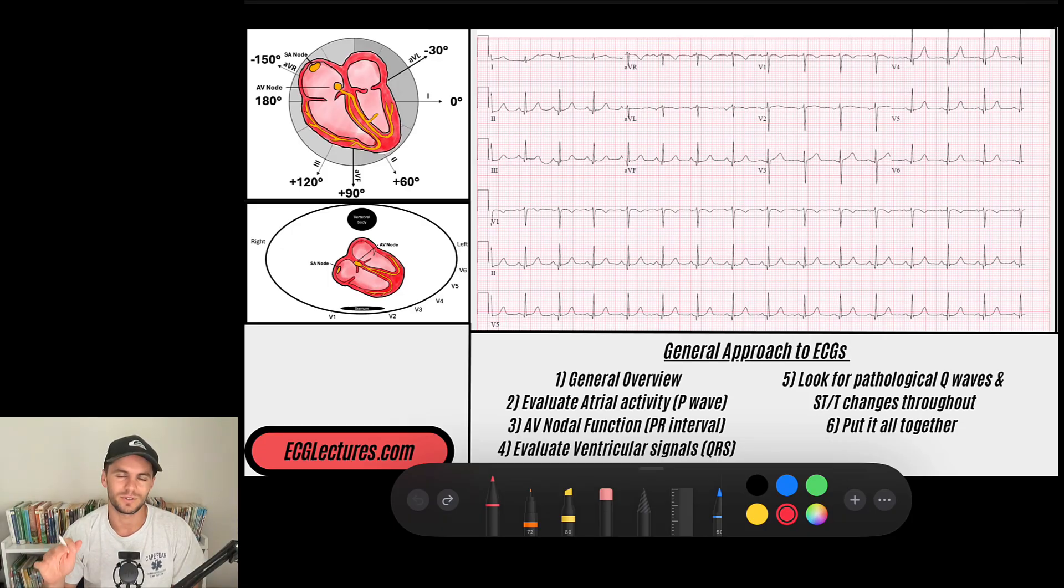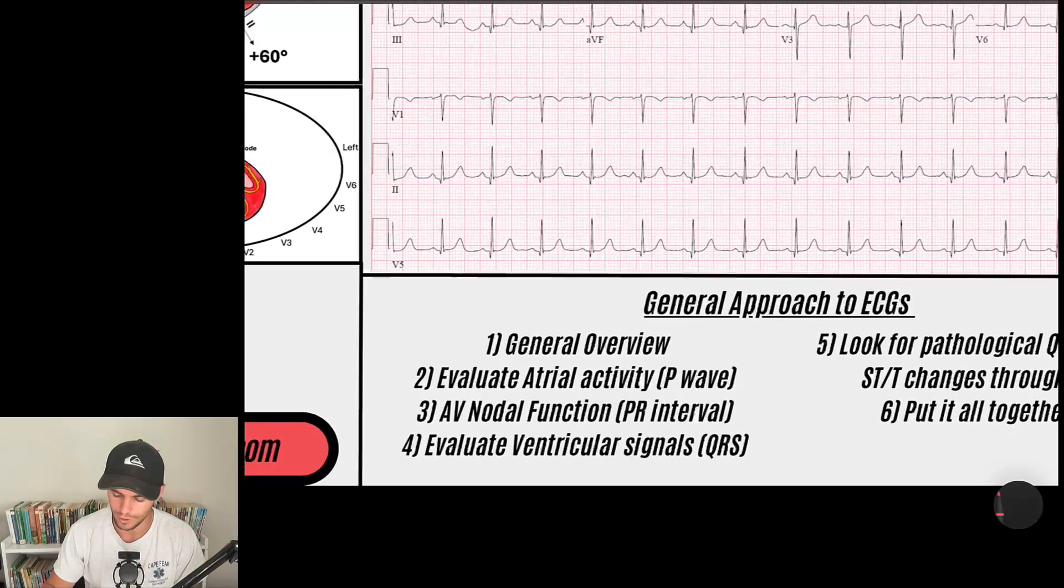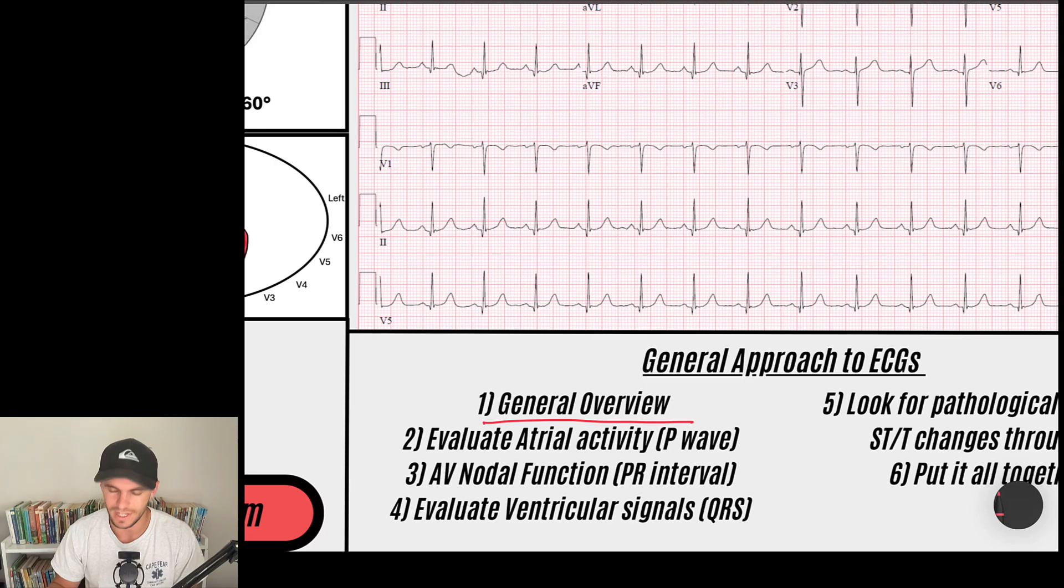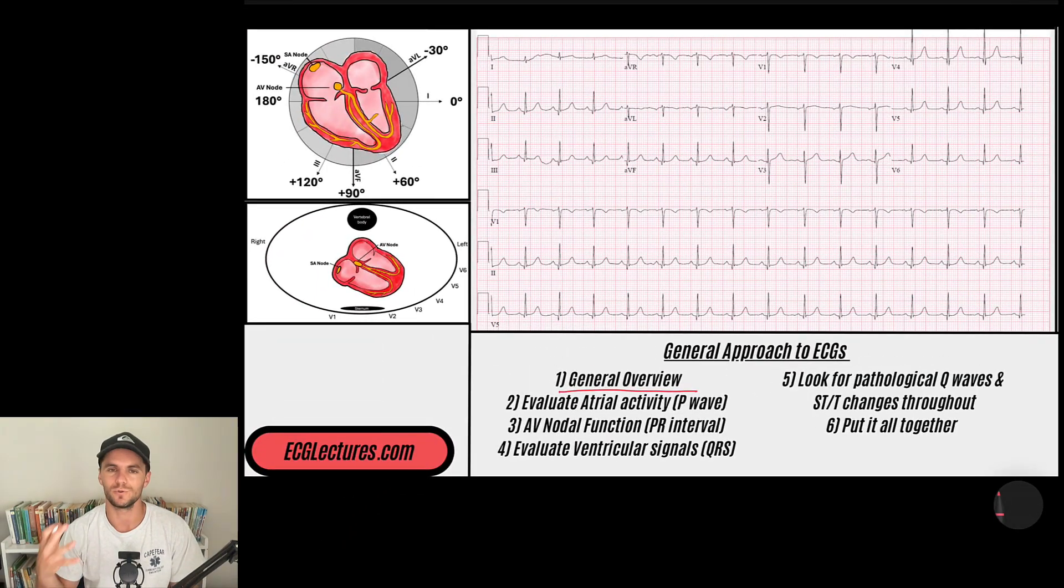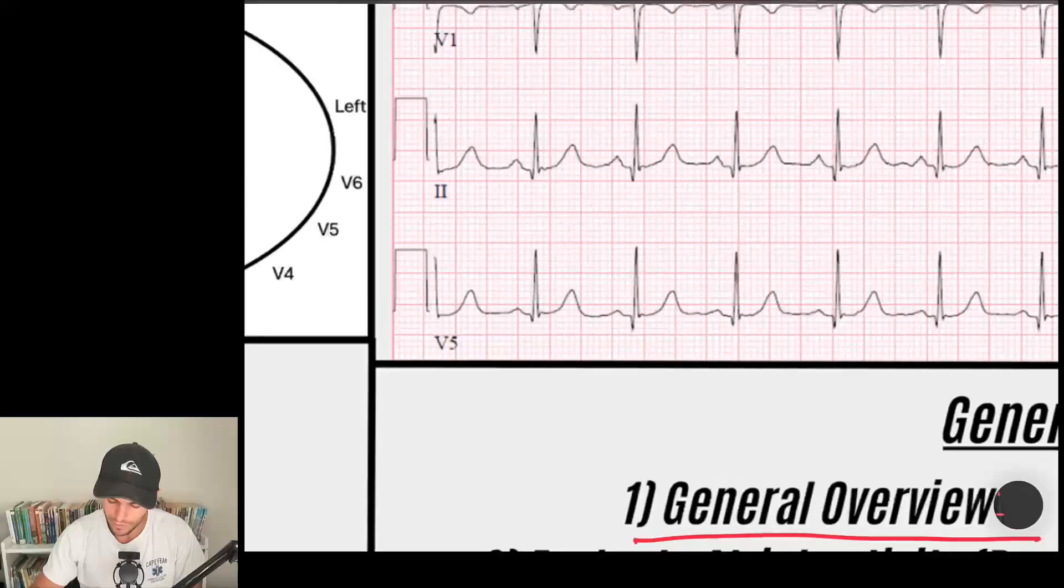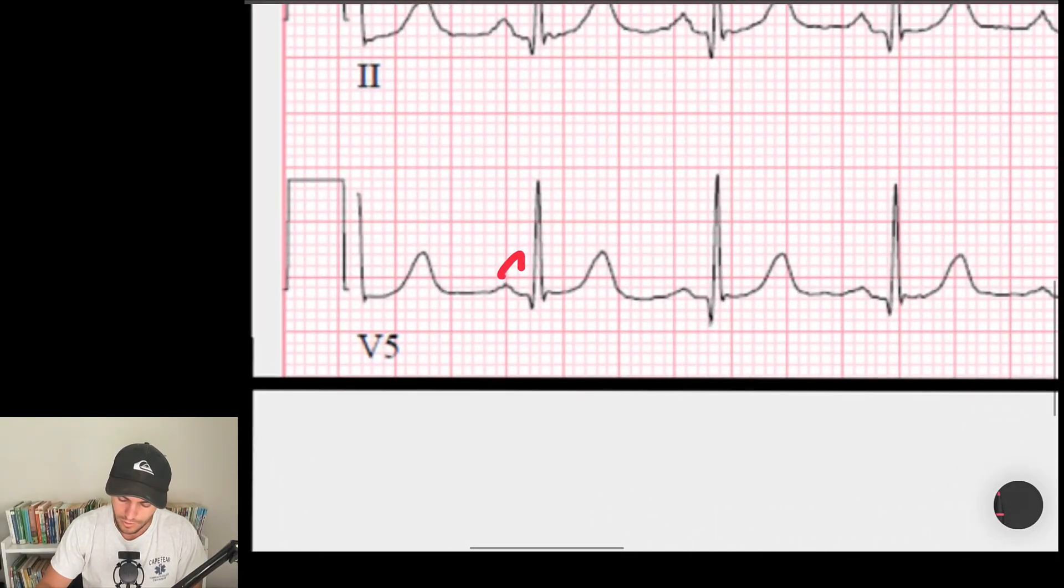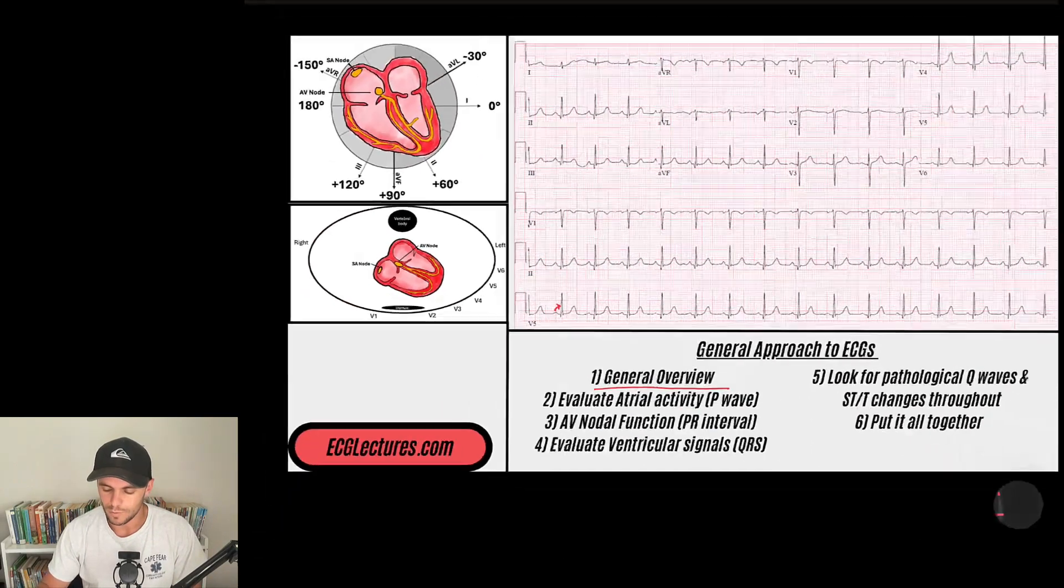As you can see, the six steps are below. We're going to talk through them when it comes to this EKG. Let's jump into it. So step number one is the general overview. What does that mean? That means we need to look at the rhythm, just look at our EKG. Zoom out. Don't get hyper-focused on exactly all these little waveforms, but just zoom out.